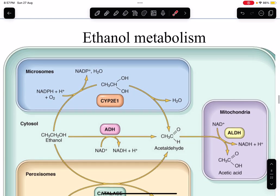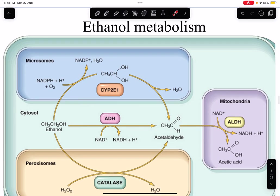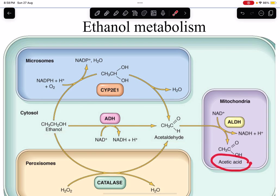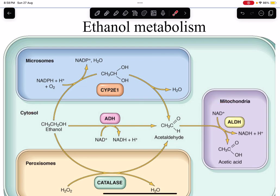Without going into full detail of ethanol metabolism: some steps occur in the cytosol and some in the mitochondria. In the cytosol, ethanol gets converted to acetaldehyde. This acetaldehyde is then converted to acetic acid inside the mitochondria. The ultimate end product of ethanol metabolism is acetic acid.